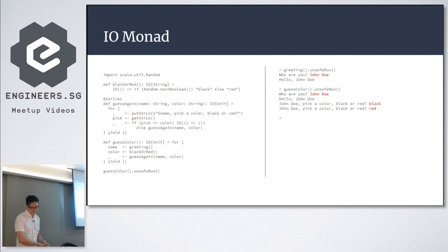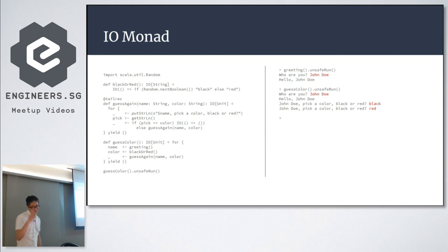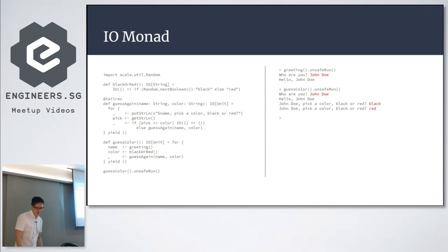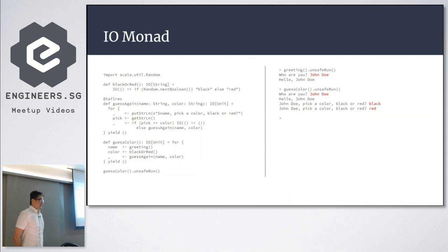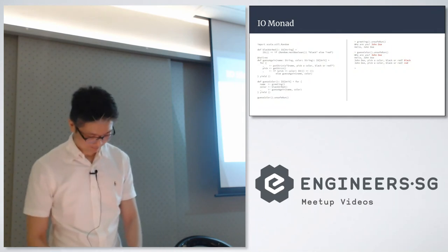Is this code correct? In the guessAgain function there's a tail recursive annotation, and guessAgain is called inside flatMap. Did you compile this? I didn't run it. Maybe you got a point there — the tail recursive annotation inside the flatMap may not work correctly. Good catch. Any more questions? Alright, thank you very much.